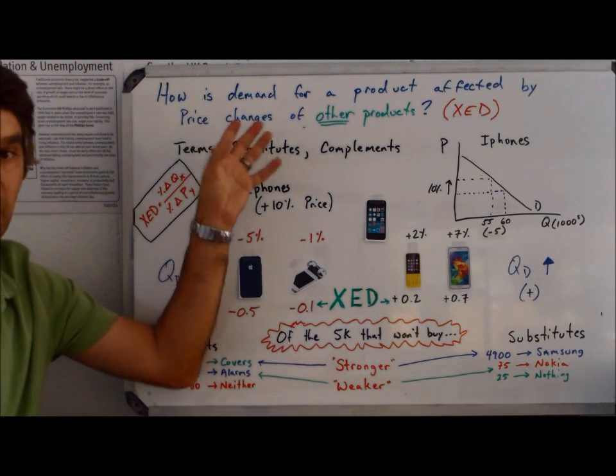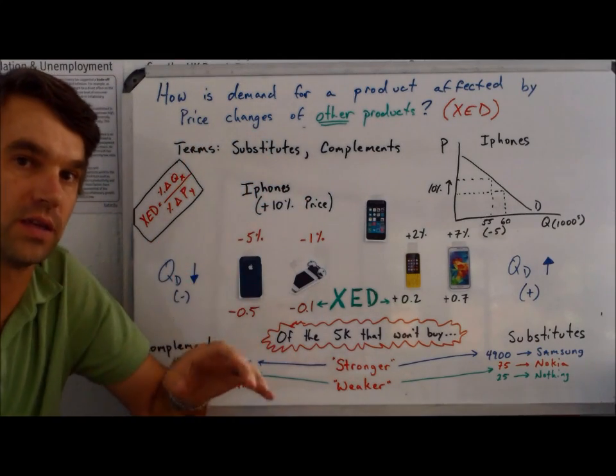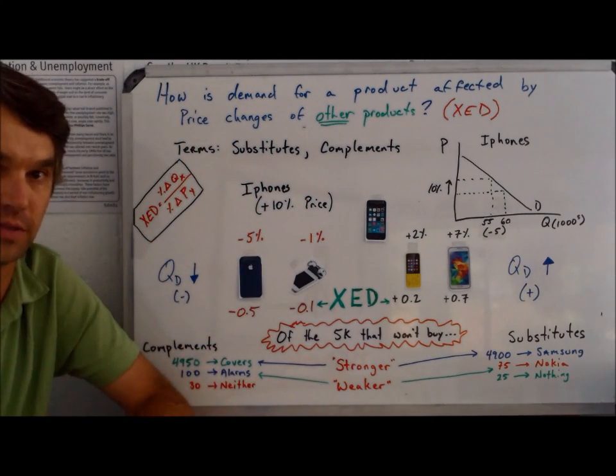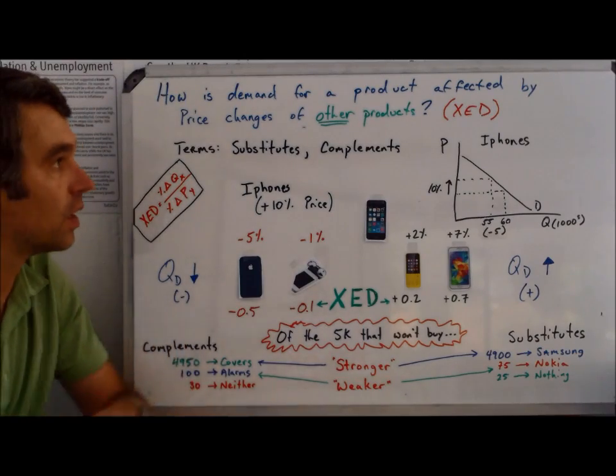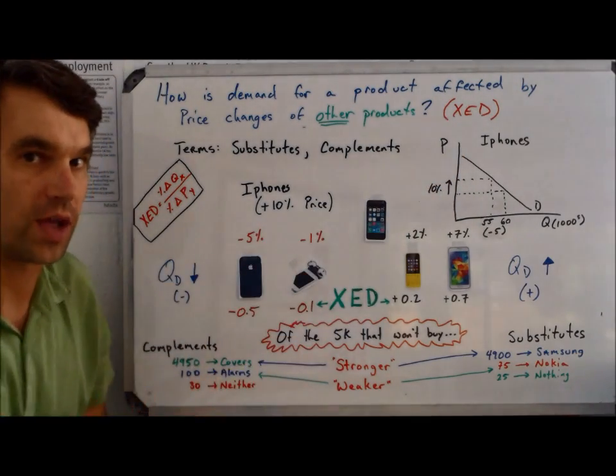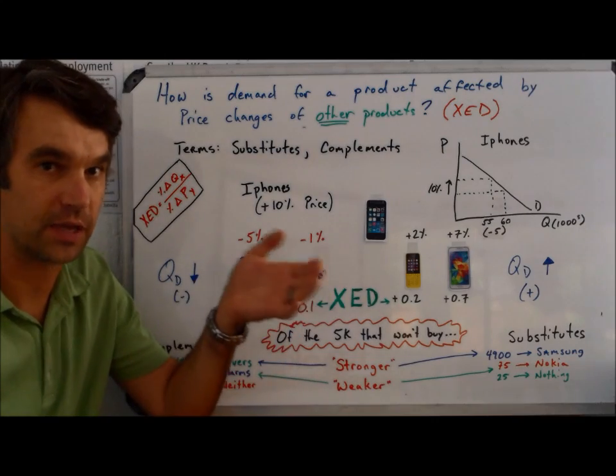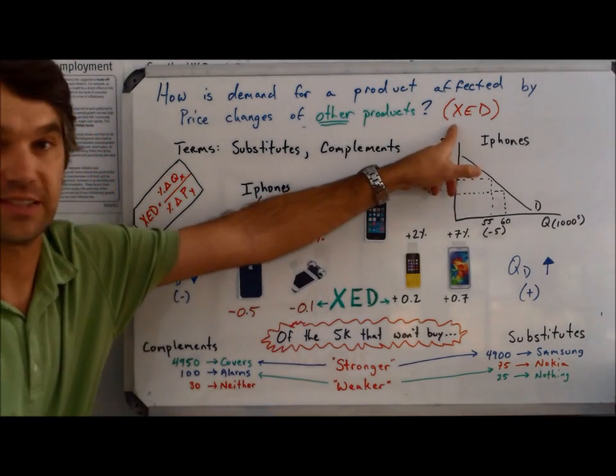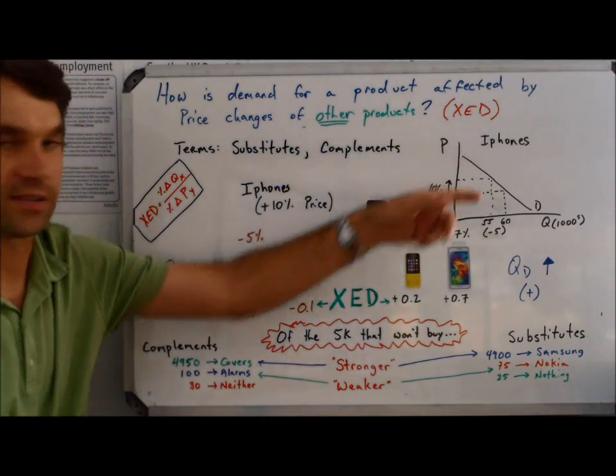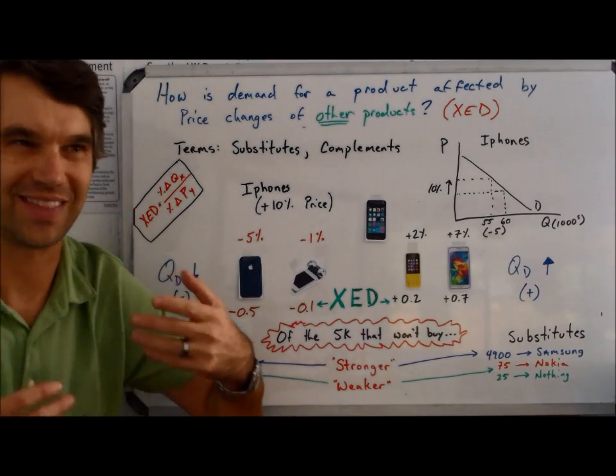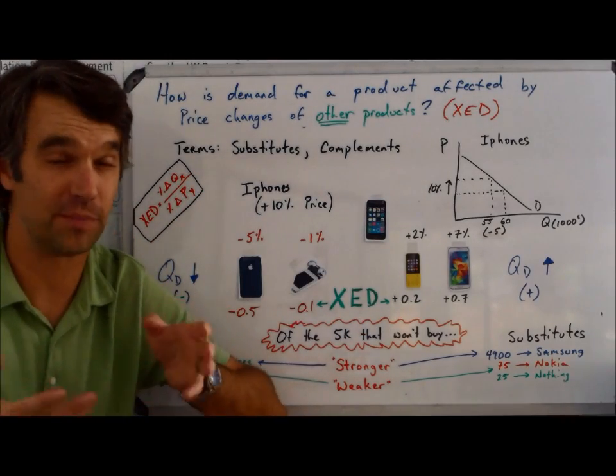Today, we're trying to answer the question of how demand for a certain product is affected by changes in price of a different product. We call this concept cross-elasticity of demand in economics, and we abbreviate it XED. The X is because it's like crossing. I think it's economists trying to be cool.